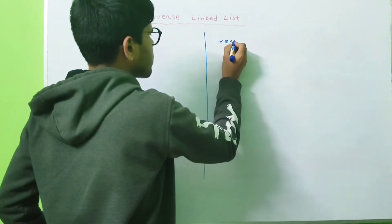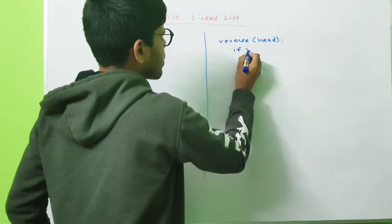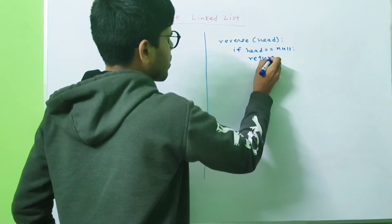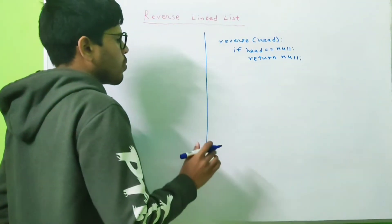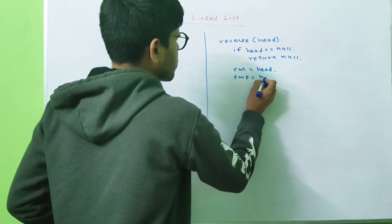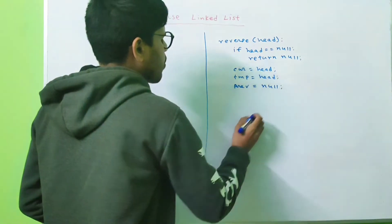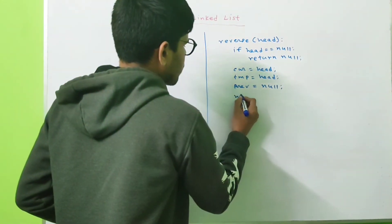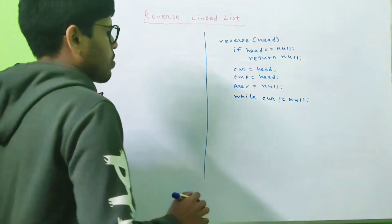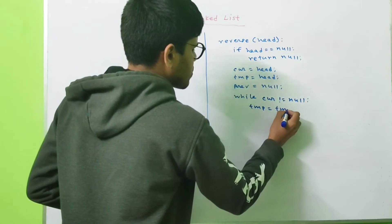Let's create a function called reverse that takes the head of a given linked list. We check if head equals null; if so, we return null. Otherwise, we create three pointers: current points to head, temp points to head, and prev points to null initially. Then we run a while loop: while current is not equal to null, we move temp to the next node — temp = temp.next — to keep track of the next node.